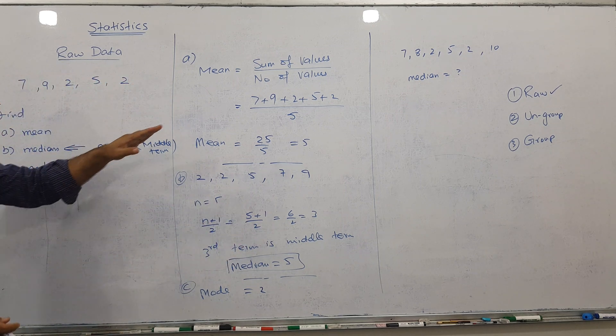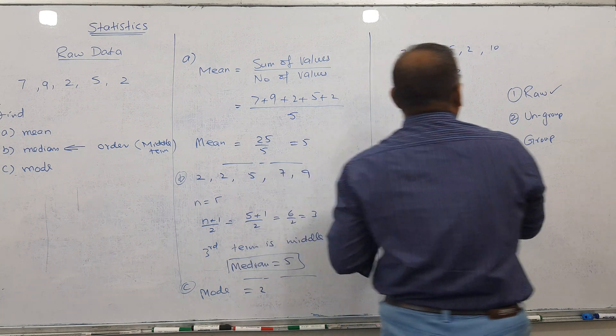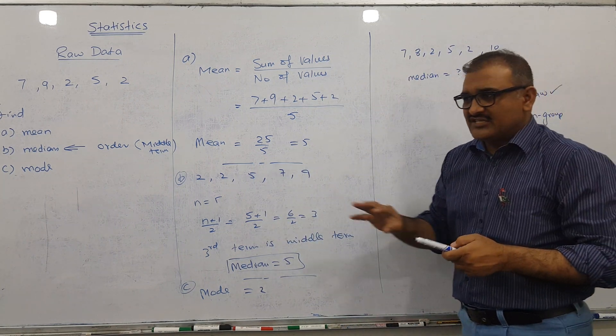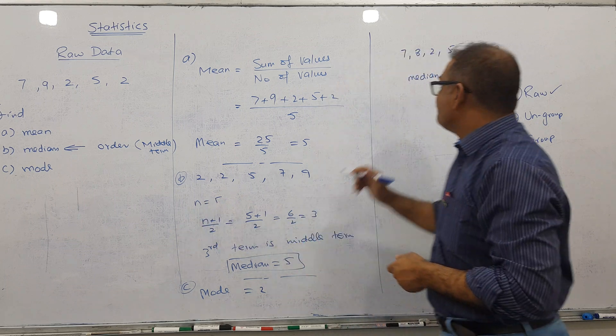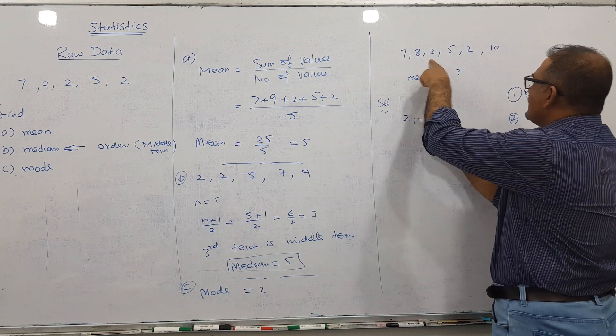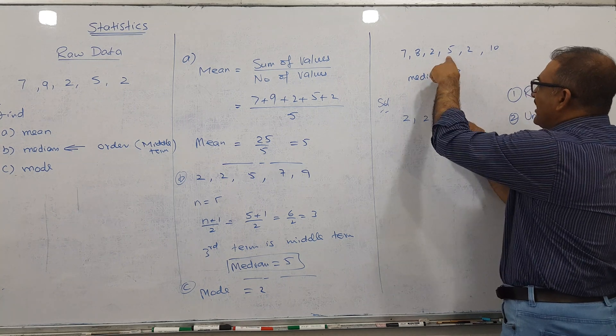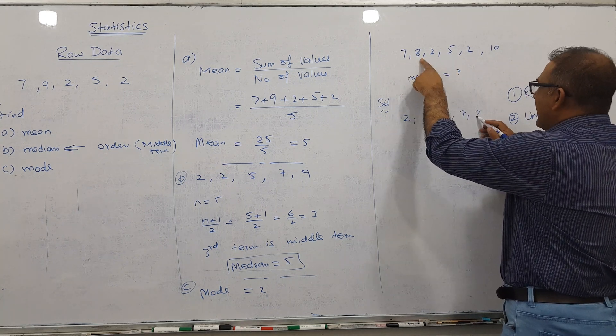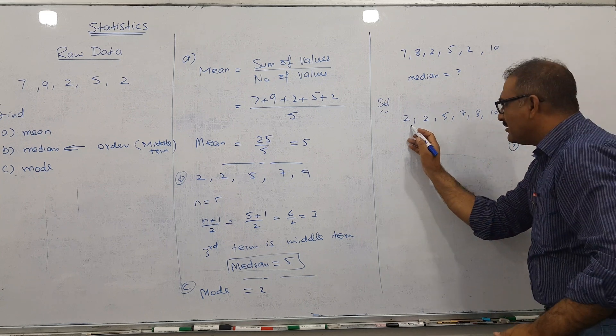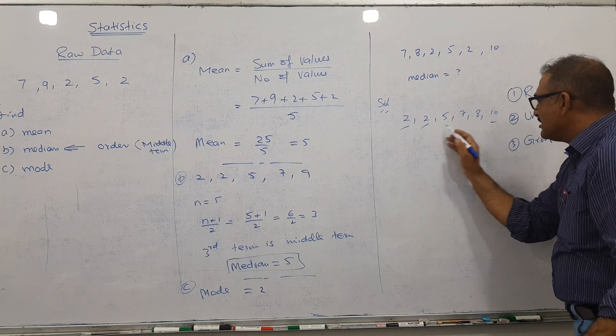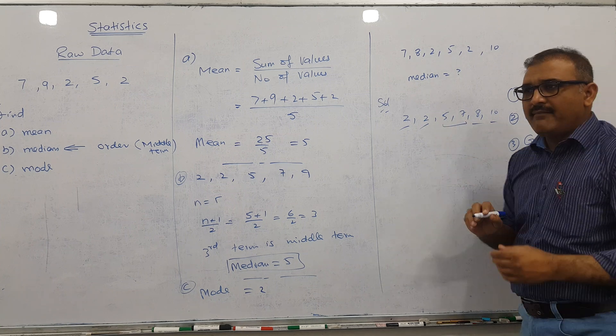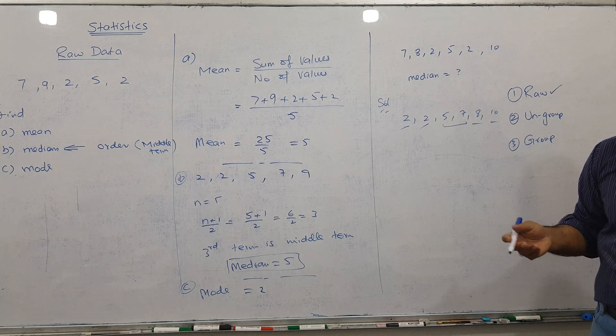This time I took six numbers for the sake of understanding. Data must be in order: 1, 2, 2, 2, 5, 7, 8, and 10. Naturally, if I cut one from here, one from here, one, one, I can't cut anymore. So these two numbers are my middle terms.